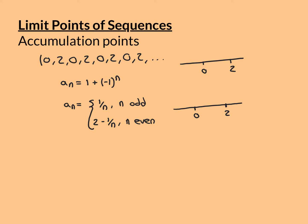Here's a slightly more complicated example. We define a_n, starting with n = 1, as 1/n if n is odd, and 2 − 1/n if n is even. So the first term (odd) is 1/1 = 1; the second term (even) is 2 − 1/2 = 1.5; the third term (odd) is 1/3; and the fourth term (even) is 2 − 1/4 = 1.75. We flip between the two rules as we alternate between odd and even terms.